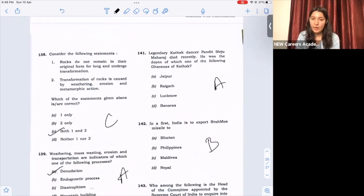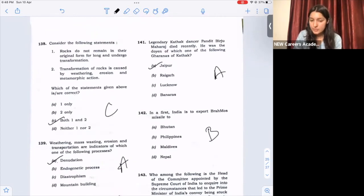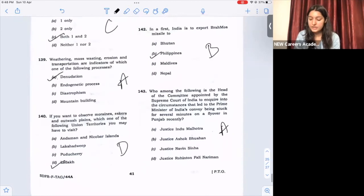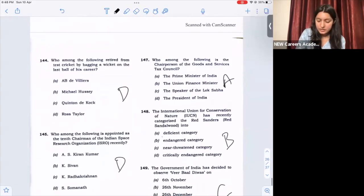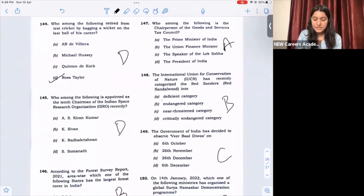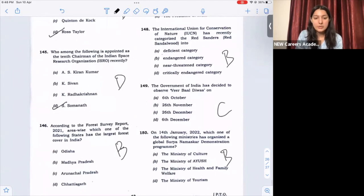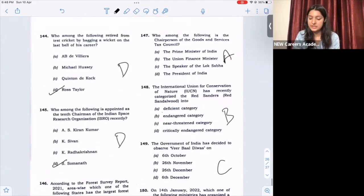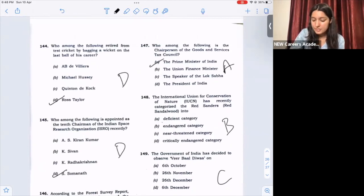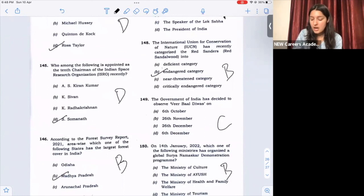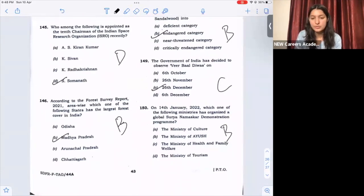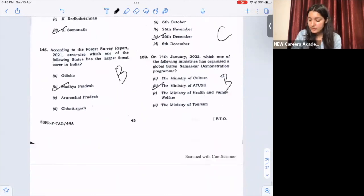141, option A, Jaipur. 142, option B, Philippines. 143, option A, Justice Indu Malhotra. 144, option D, Cross Taylor. 145, option B, S Somnath. 126, option B, Madhya Pradesh. 127, option A, the Prime Minister of India. 148, option B, Indigent Category. 147, option C, 26th December. 150, option B, the Ministry of Ayush.